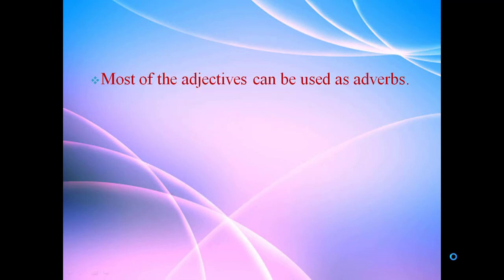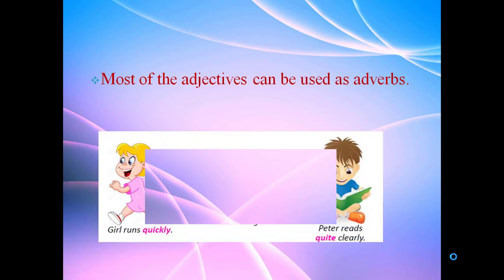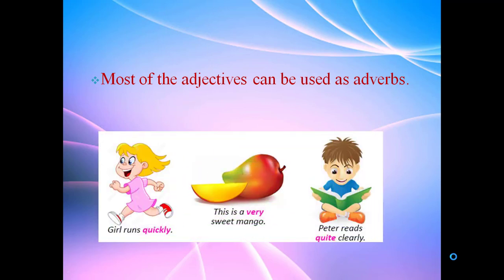Most of the adjectives can be used as adverbs. Here you observe the pictures. Girl runs quickly. This is a very sweet mango. Peter reads quite clearly. In these sentences, quickly, very, and quite — they are called adverbs and can be used as adverbs.